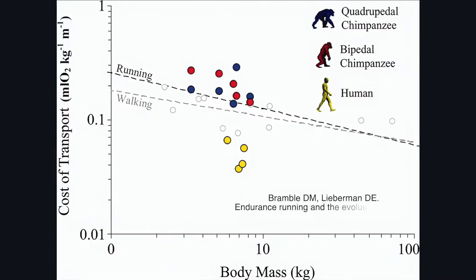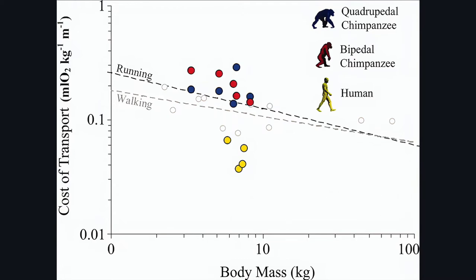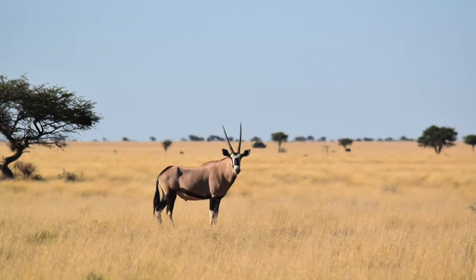Laboratory studies that have enticed chimps to walk on treadmills while wearing oxygen masks have found that these apes spend four times more energy to walk a given distance — on either two or four limbs — than humans. That is a massive amount for a species trying to fulfil daily energy demands. Chimps walk comparatively little, only about two or three kilometres a day. Being able to walk farther using the same amount of energy would have been a very beneficial adaptation as the rainforest shrank, fragmented and opened up, causing preferred foods to become rarer and more dispersed.